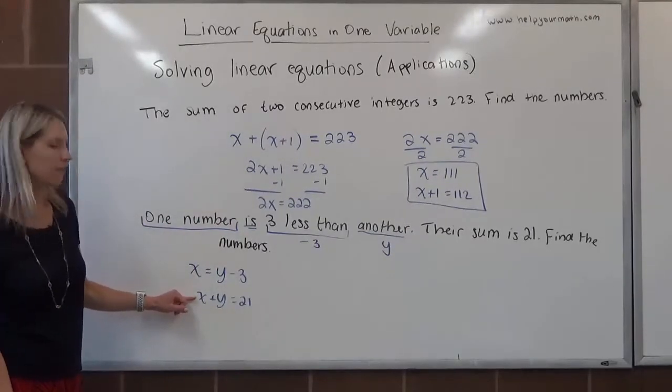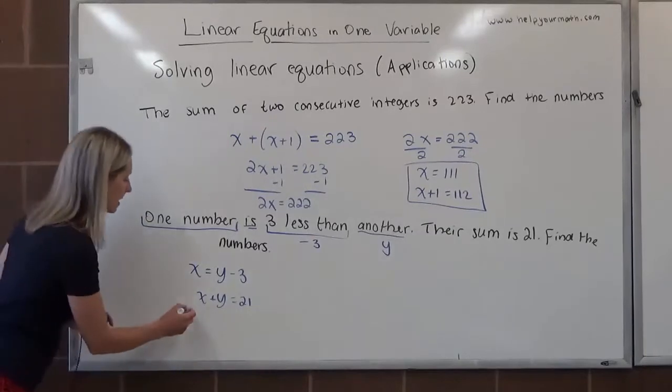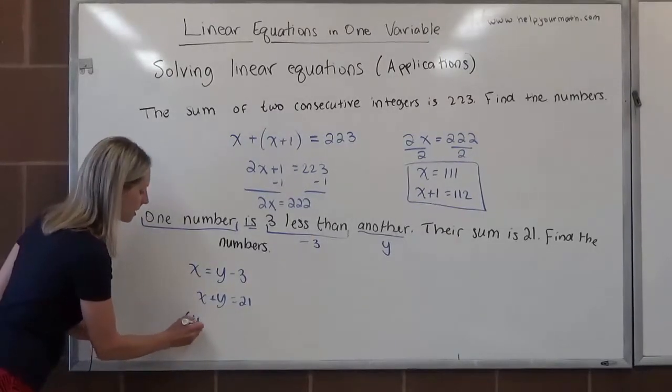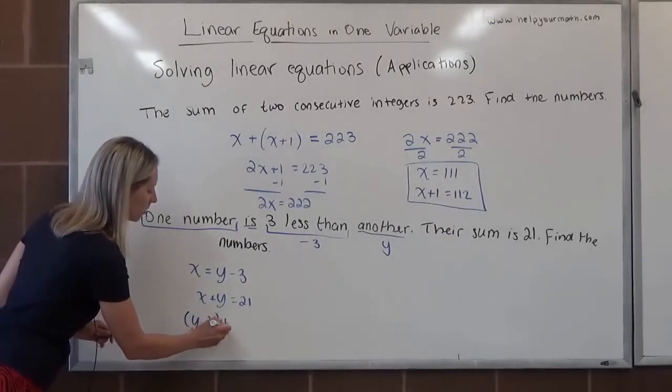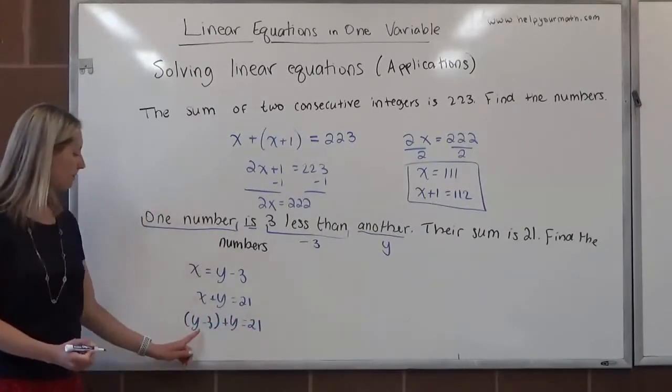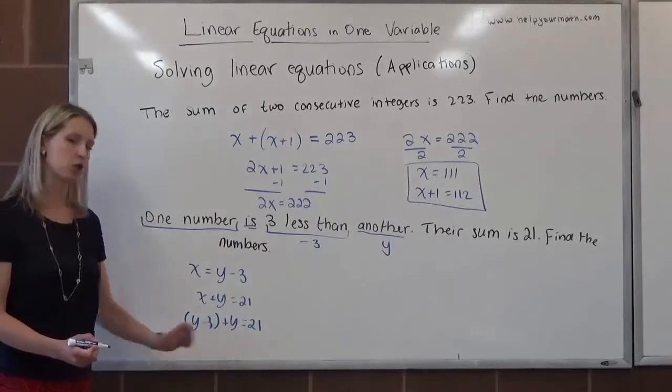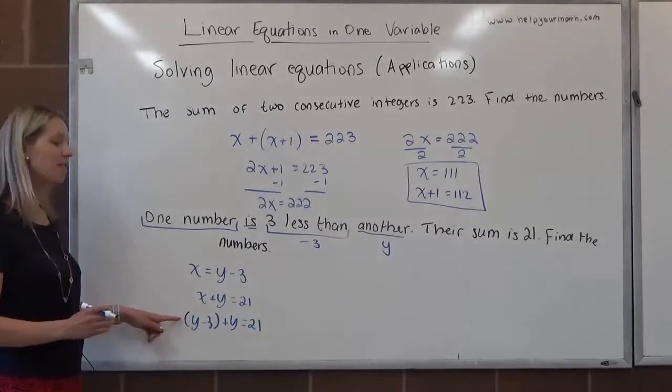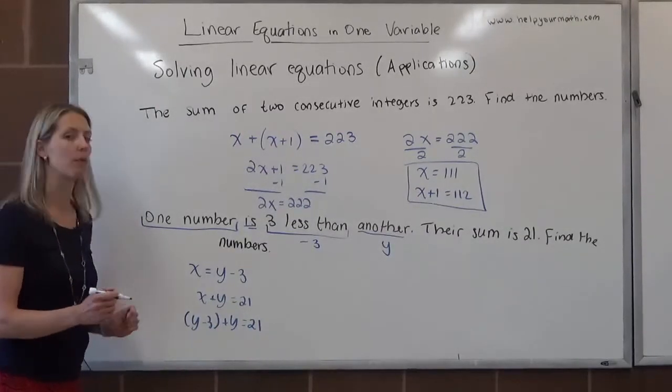So right here, instead of x, I'm going to rewrite it as y minus 3 and just for emphasis, I'm going to put the parentheses there, but really they don't do anything to this problem. So now we have the first number plus the second number is 21. Now we have one variable, one equation, we're ready to solve.